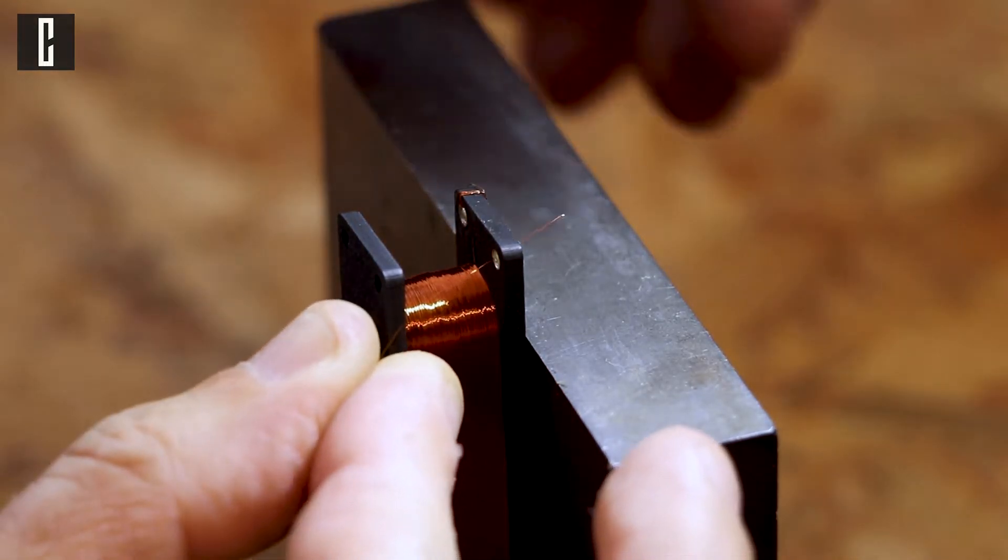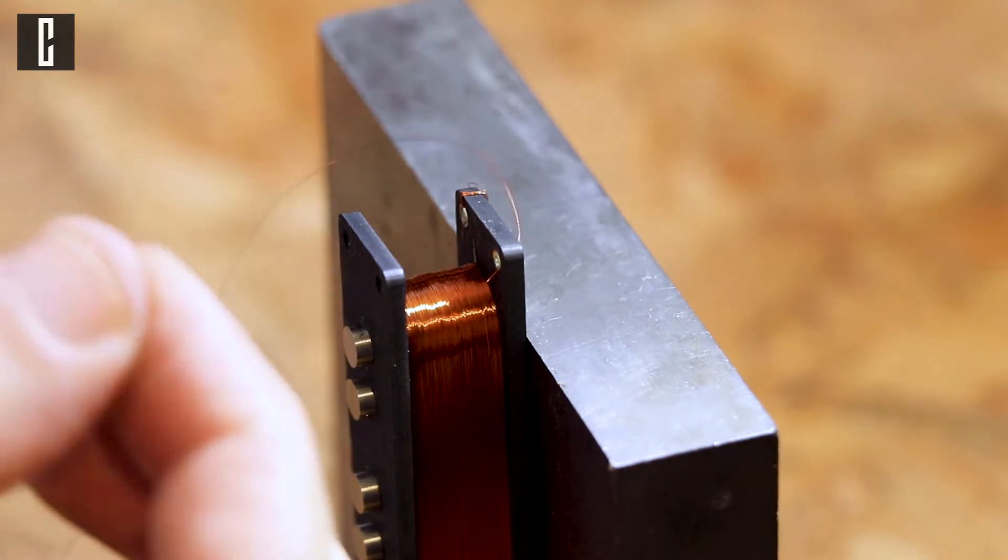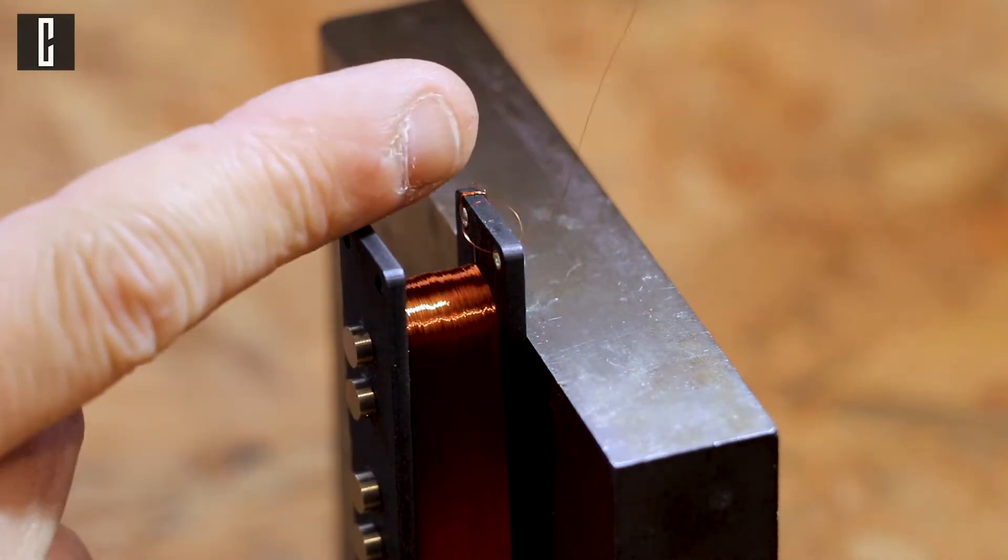Now we'll take the end of the wire and insert it through the other eyelet so everything is tight and secured.